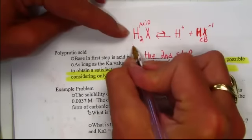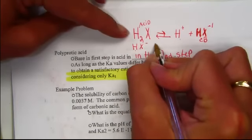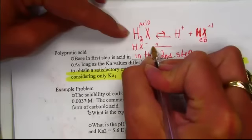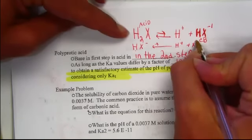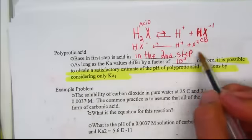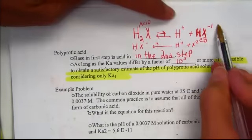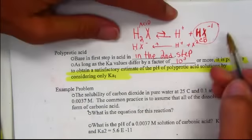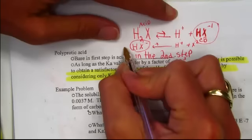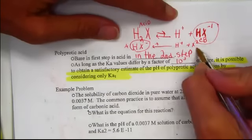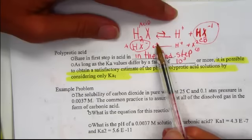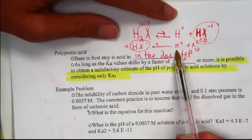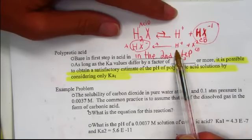ionizes a little bit more to produce a conjugate pair as well. The base in the first step becomes the acid in the second step. But its ionization is so small, producing very few hydrogen ions, it's not worth measuring in terms of contribution to a pH.